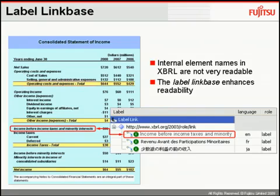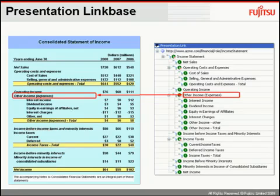You've probably noticed that the names we've been using are not always terribly meaningful — they have to conform to XML standards. So what we need is names that are more meaningful for people reading these reports. That's where we use what we term the label link base. It's simply a way of adding extra information to elements in an XBRL document — in this case, representing the name in a readable English fashion, which can have spaces in it, etc.